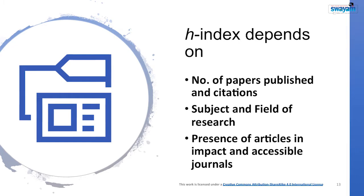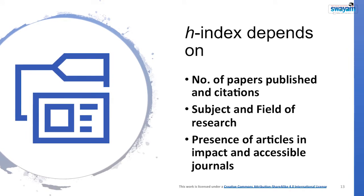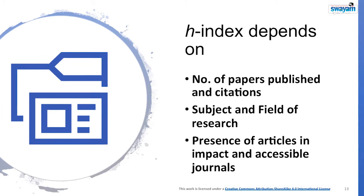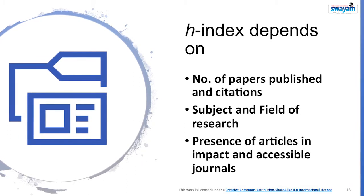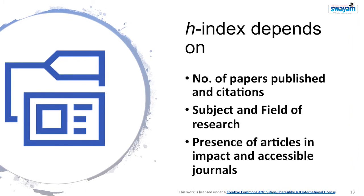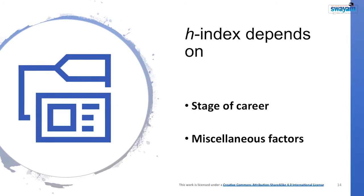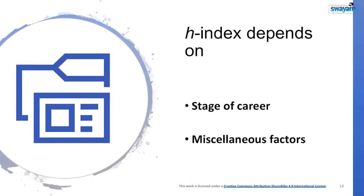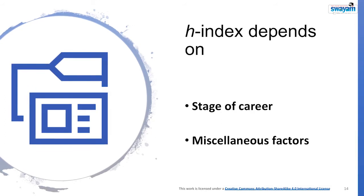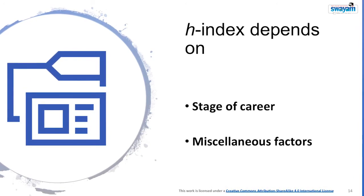Higher numbers of papers and citations lead to a higher H-index. Factors affecting H-index include: subject and field of research — science researchers generally have higher H-index than arts and humanities researchers; presence of articles in high-impact and accessible journals; stage of career — senior researchers invariably have higher H-index than new entrants; and types of papers — pioneer research and review papers are cited more. Hirsch's 2005 paper, being pioneering, is highly cited and plays a vital role in improving his H-index.